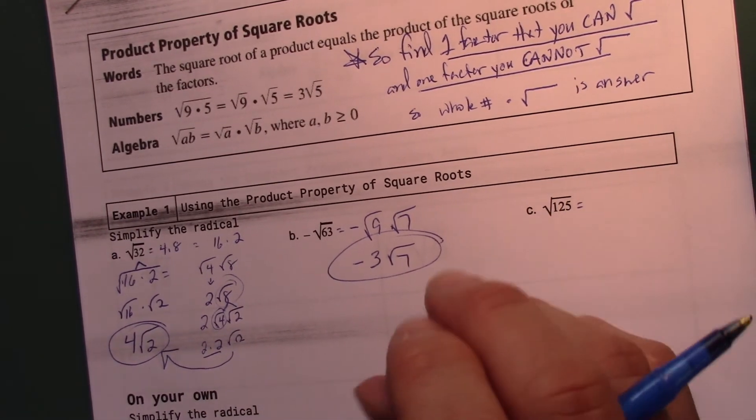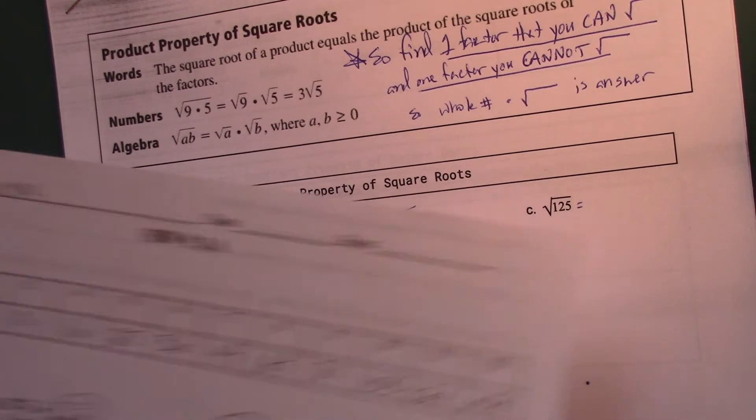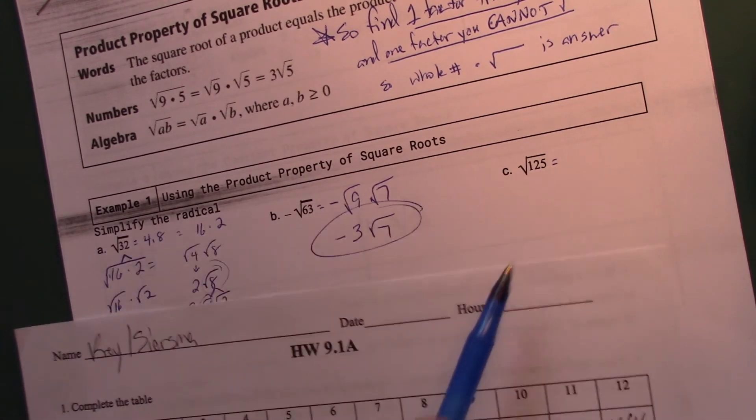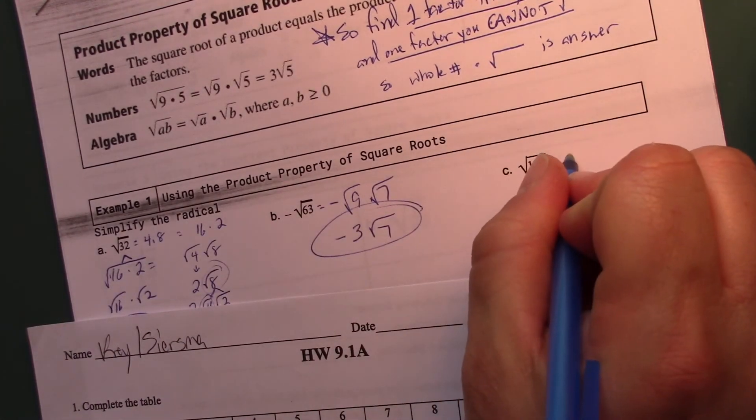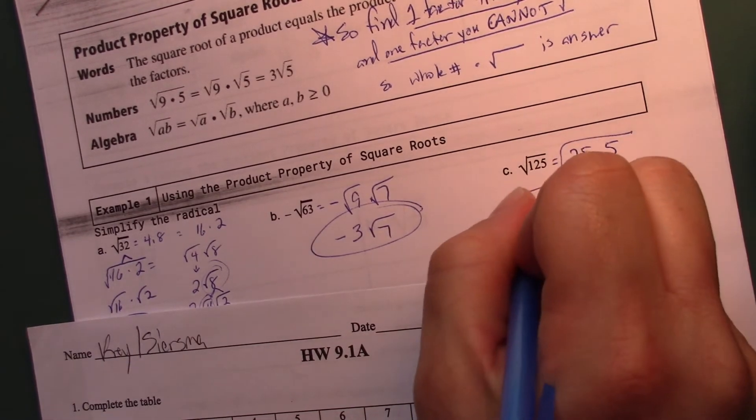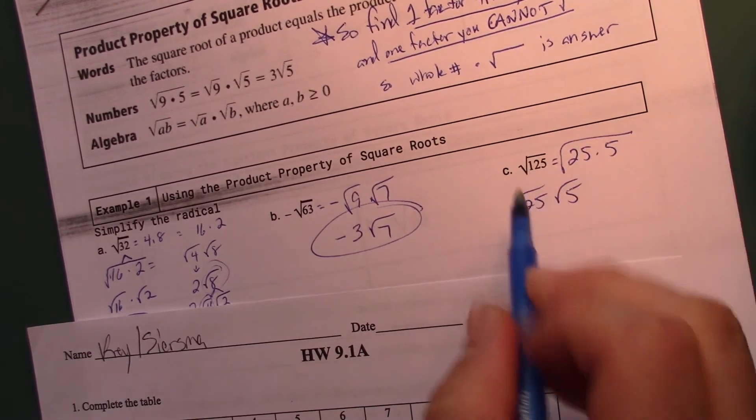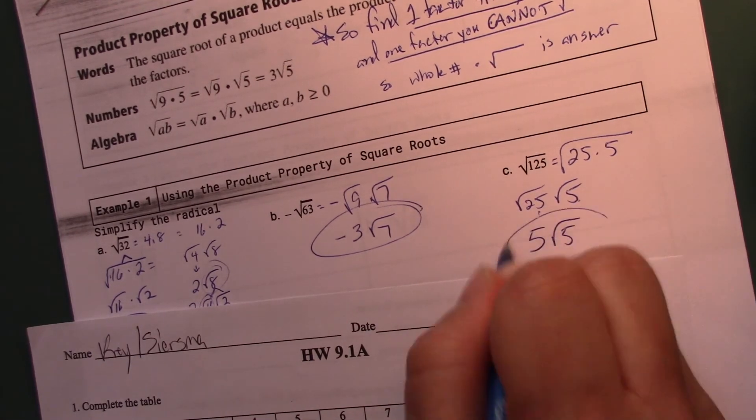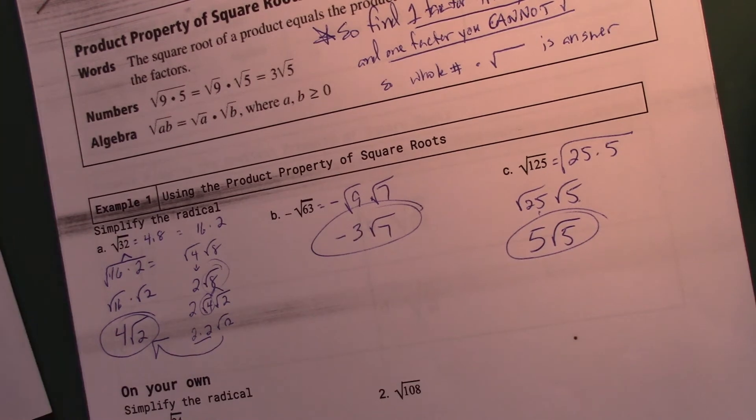125. I started looking at that sheet. Does 4 go into it? Does 9? I'm looking through this row. Does 4 go into it? Does 9 go into it? Does 16 go into it? Does 25? 25 does. That's like a buck 25, which is 5 quarters. So this is 25 times 5, which again is square root of 25 and square root of 5. Something I can take the square root of? That's 5. And something I can't, square root of 5. That's it.